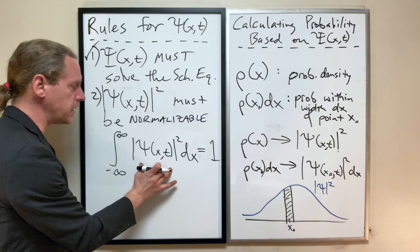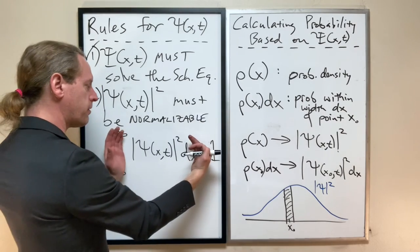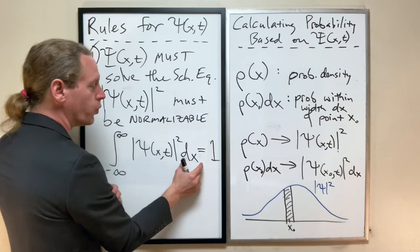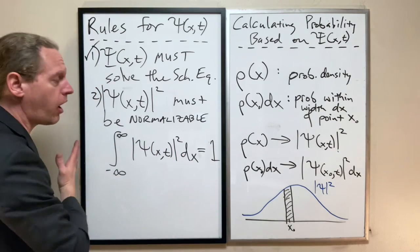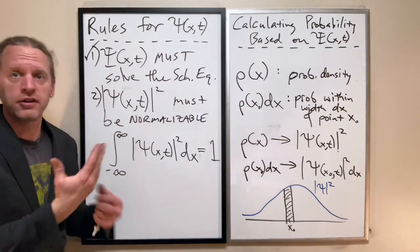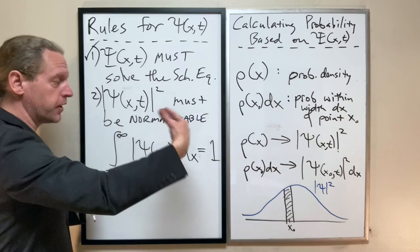So we know that, so interpreting what this means, we've already said that this thing right here is the likelihood of a particle appearing within that width dx. And if we add up all the possible positions where it might be,